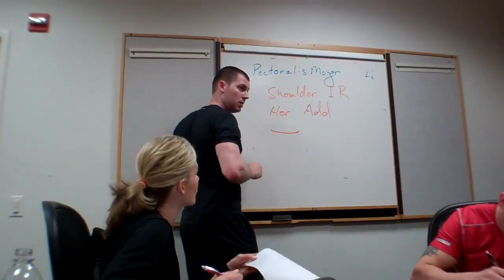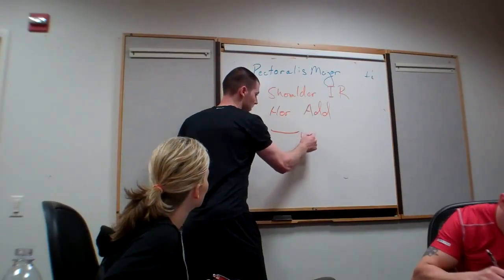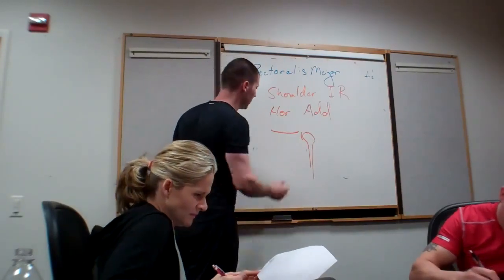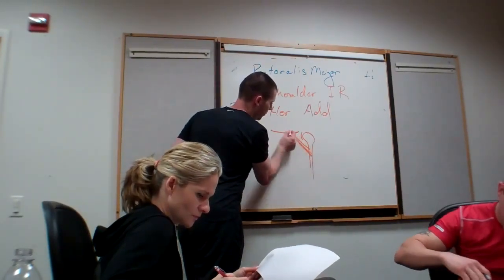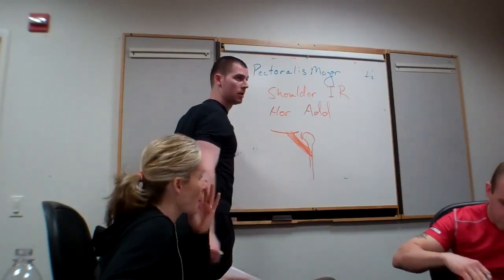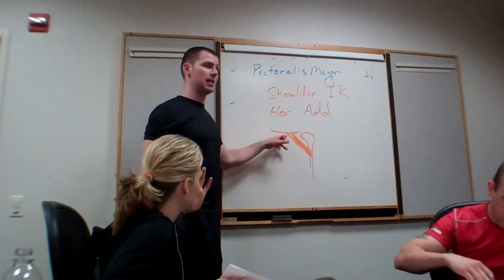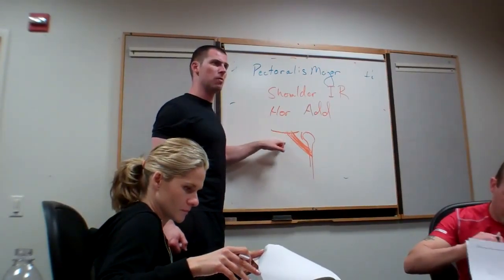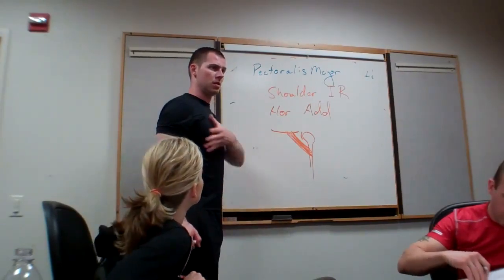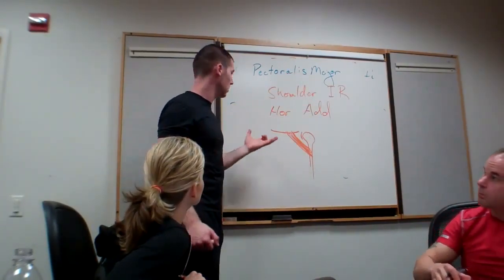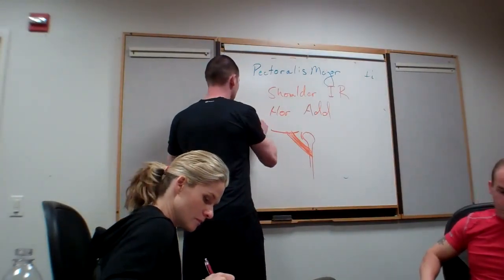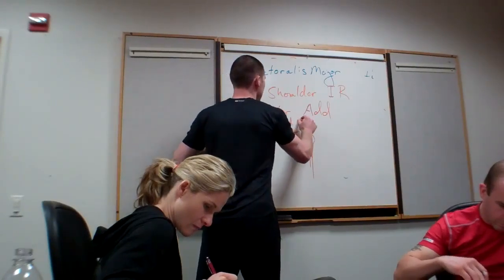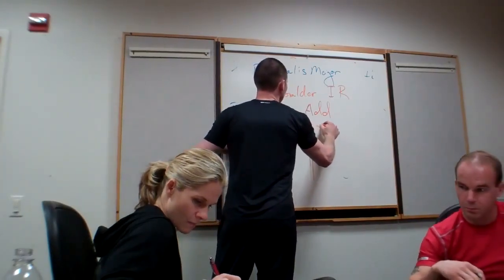Now let's look at the clavicular head. Some of the fibers in my clavicular head are very vertically oriented — up and down. So with my arm down by my side, what do you think the clavicular head could help with? It doesn't have a perfect angle for it, but it can help with a little bit of shoulder flexion. So we can say the clavicular head assists with shoulder flexion.